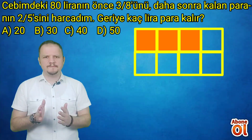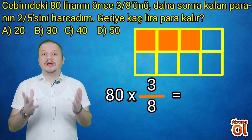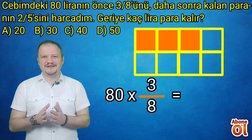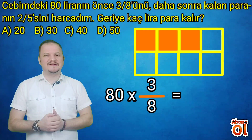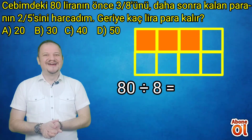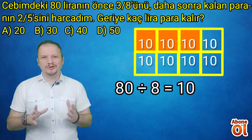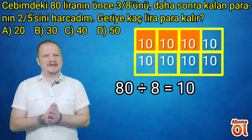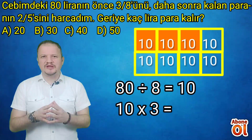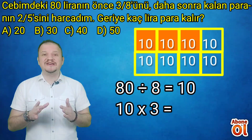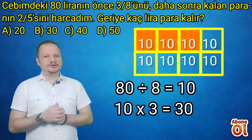Bir kesirin paydasındaki sayı, bütünün kaç parçaya ayrıldığını gösterir. Bu tarz kesir problemlerinde, bir çokluğun birim kesiri kadarını bulurken önce paydadaki sayıya böleceğiz. Yani 80'i 8'e böleceğiz; 10 sayısına ulaşırız. Her parça 10 liradır. 8'de 3'ünü harcadığımıza göre 10 ile 3'ü çarpıyoruz; 30 eder.